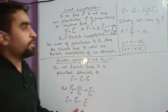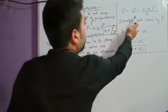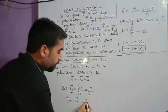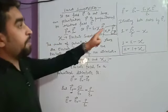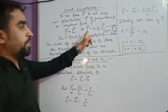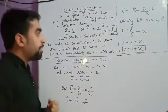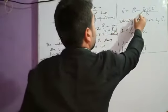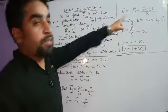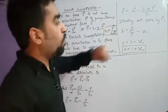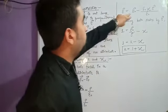Substituting into E = E₀ minus Ep, we replace Ep with P/ε₀. The polarization density P equals ε₀·χ·E, so substituting: E = E₀ minus (ε₀·χ·E / ε₀). The ε₀ terms cancel out, giving E = E₀ minus χ·E. Dividing the entire equation by E, we get 1 = (E₀/E) minus χ.